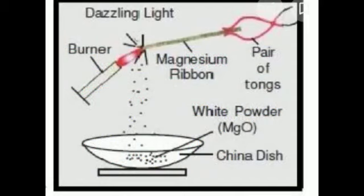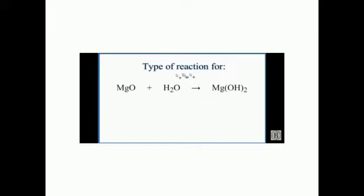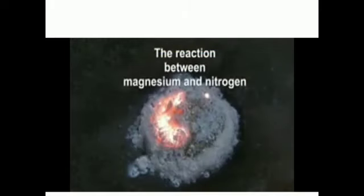اس diagram میں آپ دیکھ سکتے ہیں کہ magnesium ribbon کو جب burn کیا جاتا ہے — as we know oxygen is everywhere — تو burning کو oxygen support کرتی ہے اور نتیجے کے طور پر white powder بنتا ہے جسے china dish میں جمع کیا جا رہا ہے، اسے magnesia یعنی magnesium oxide کہتے ہیں۔ اسی MgO کو water کے ساتھ react کروانے پر strong base magnesium hydroxide produce ہوتا ہے۔ اسی طرح جب magnesium nitrogen کے ساتھ react کرتا ہے تو powdery form میں magnesium nitride بنتا ہے، جسے paste کی فارم میں instruments اور utensils پر apply کیا جاتا ہے۔